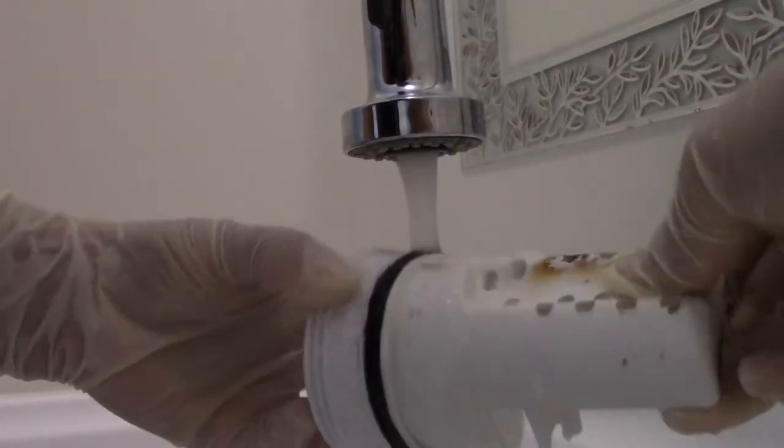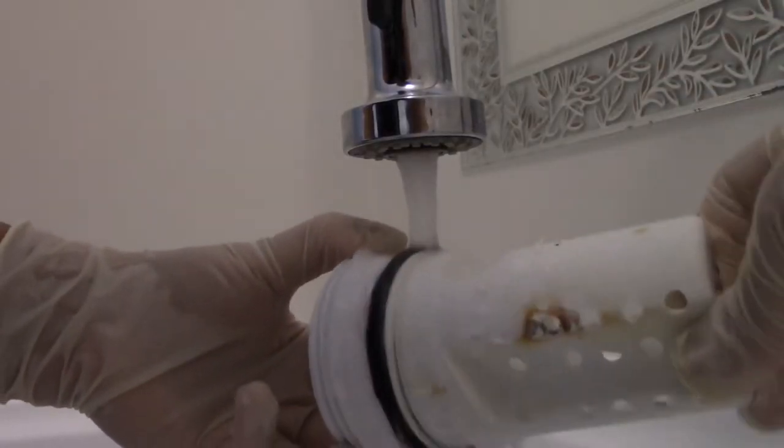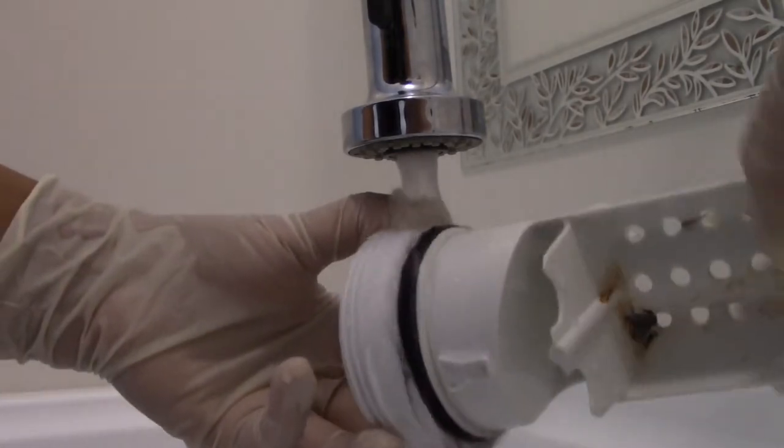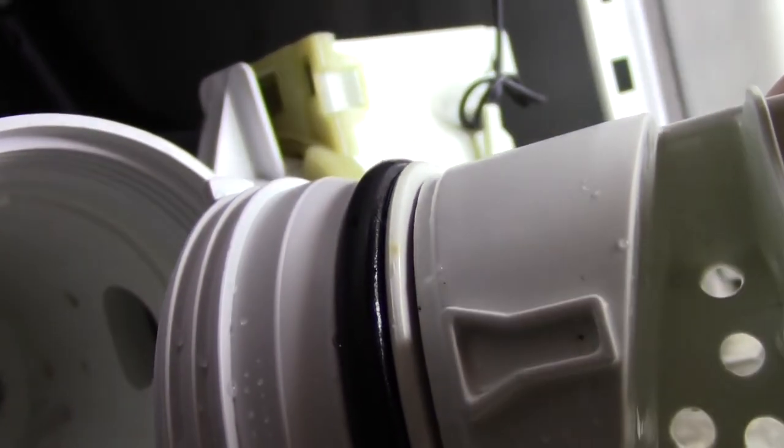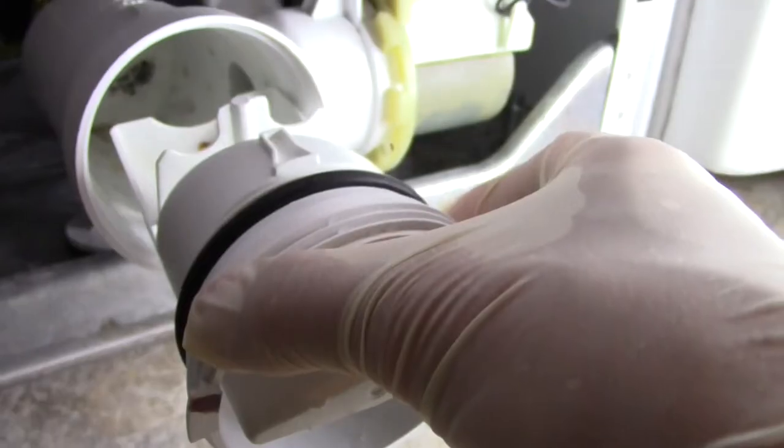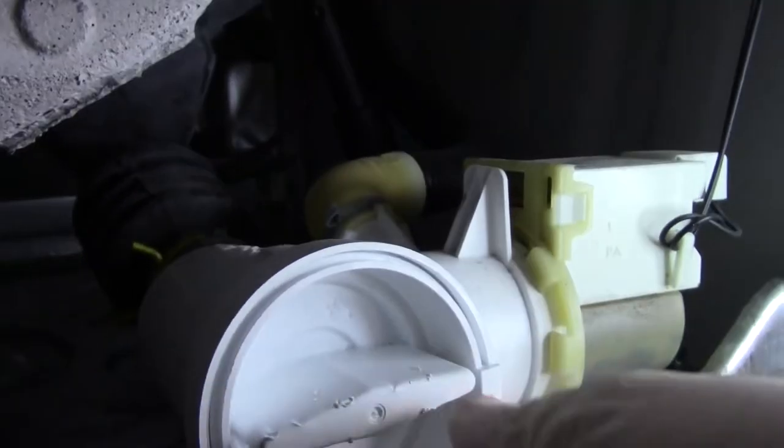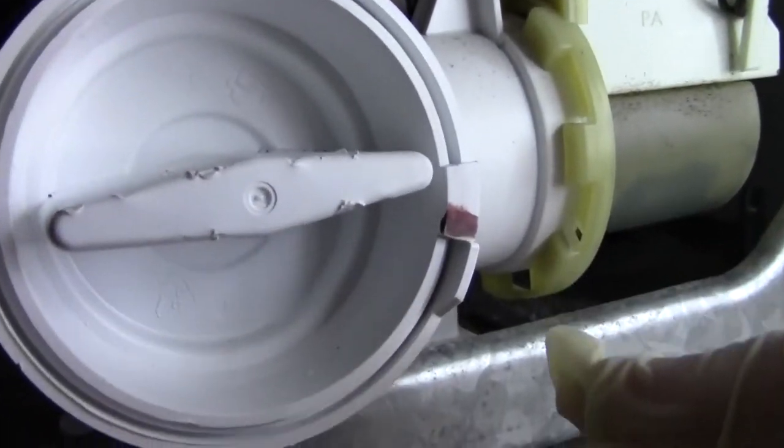When you are done cleaning and ready to screw it back, you will find two signs: the flashlight on the top and the rectangle on the bottom. Fit these into place and screw it until you reach this top. If you clean it properly and put it in properly, you should be able to screw it with your hand easily.